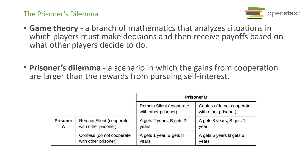Unique to the cartel situation is something called game theory. For anyone who wants to major in economics, there are entire classes on game theory. Game theory involves setting up a game with payoffs to see how players behave under different scenarios. The most well-known example is the prisoner's dilemma, made famous by mathematician John Nash — who already passed away. There was a movie made about him: A Beautiful Mind, starring Russell Crowe.